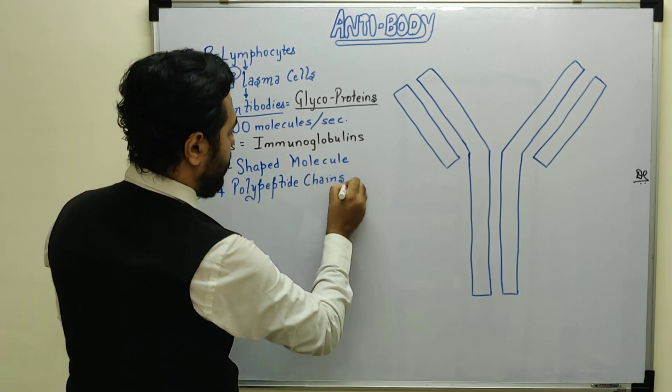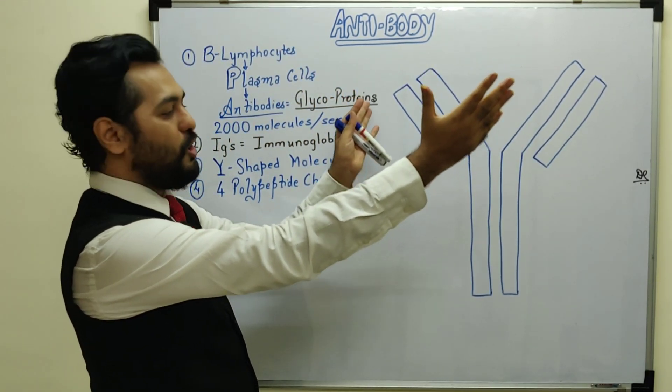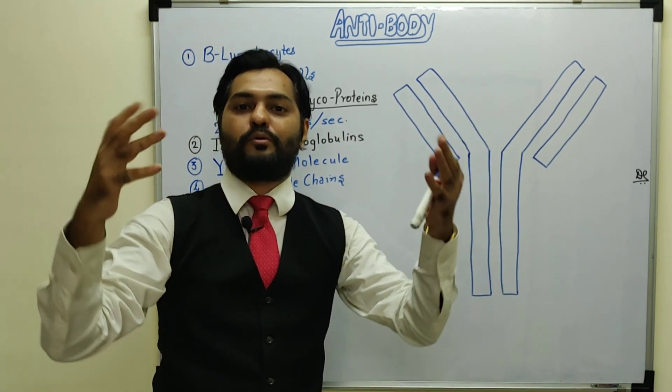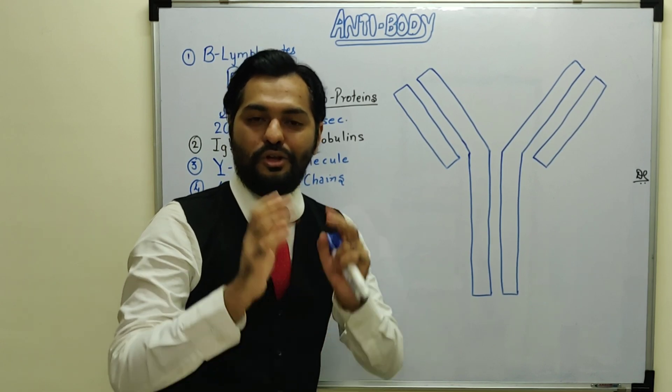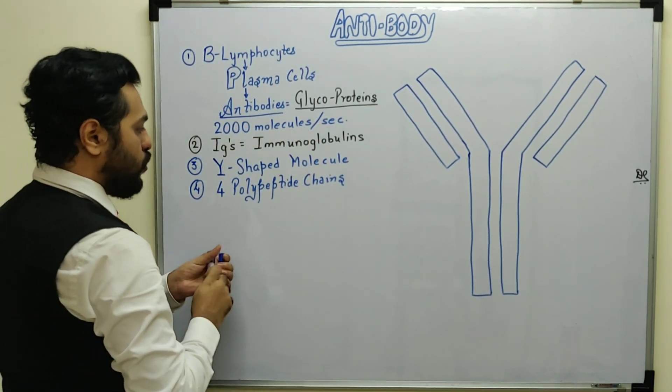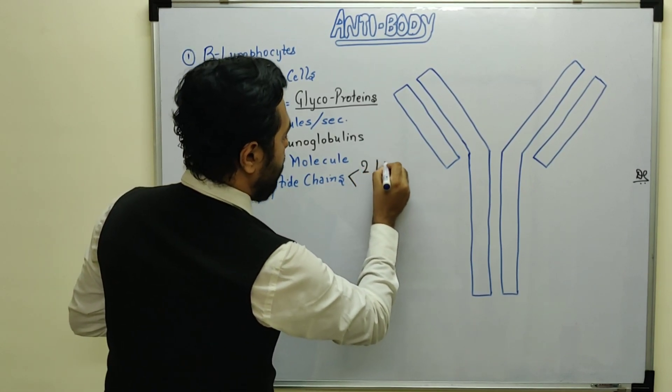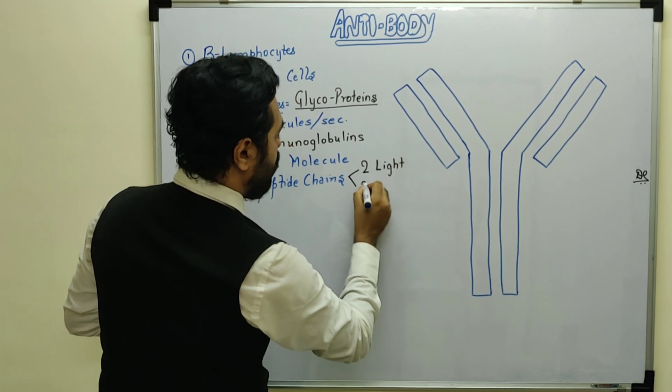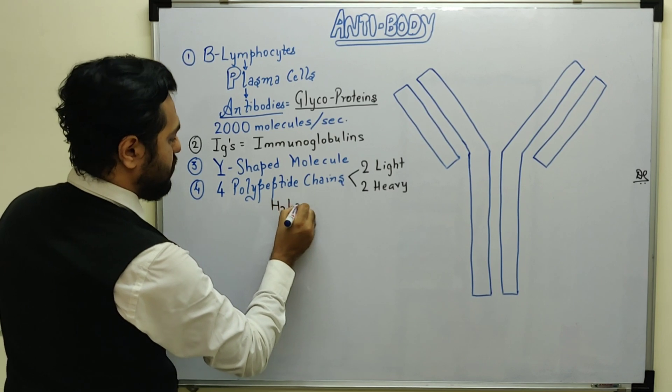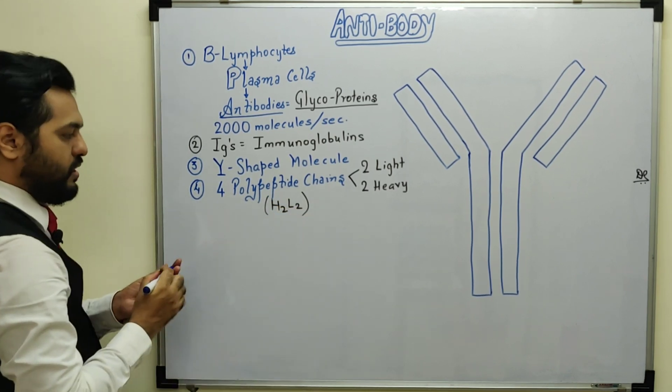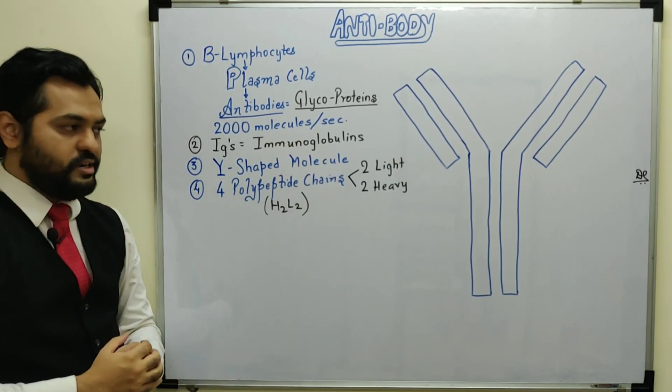These four polypeptide chains include two chains on the outer side which are lighter, and the other two extend down which are heavier. The four polypeptide chains consist of two light chains and two heavy chains. In NEET this is written as H2L2, meaning two heavy chains and two light chains together forming four polypeptide chains.